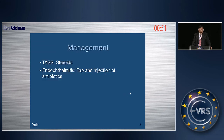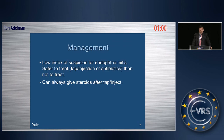From a management standpoint, TASS is treated with steroids and endophthalmitis with tap and injection of antibiotics. However, given a low threshold of suspicion — even if there is only a 20% chance of endophthalmitis — it is safer to perform tap and injection of antibiotics first, and then add steroids if there is no improvement. Thank you.